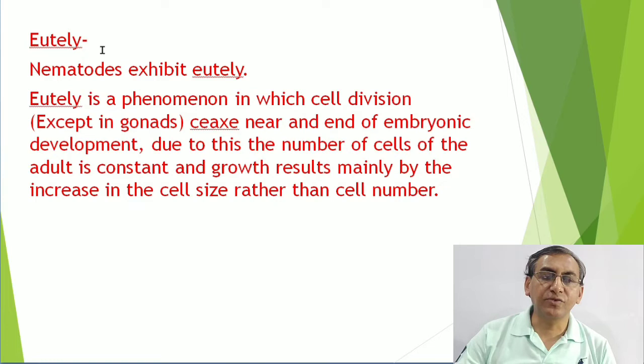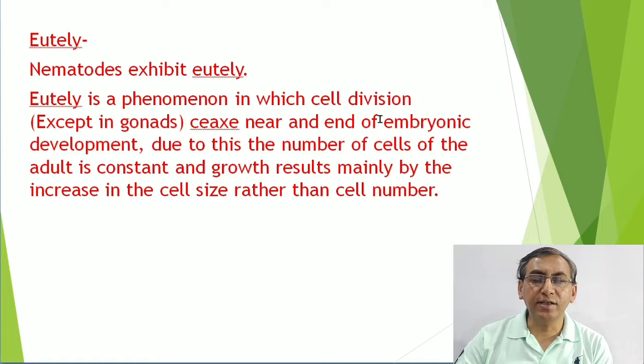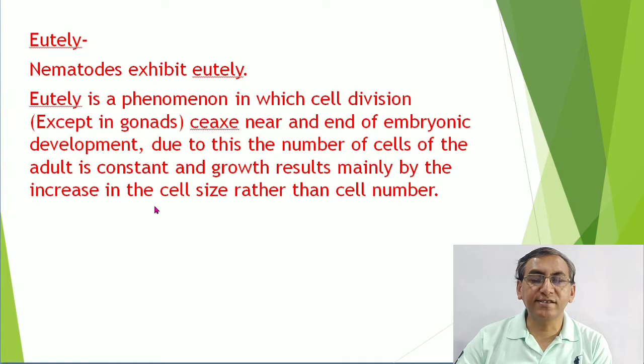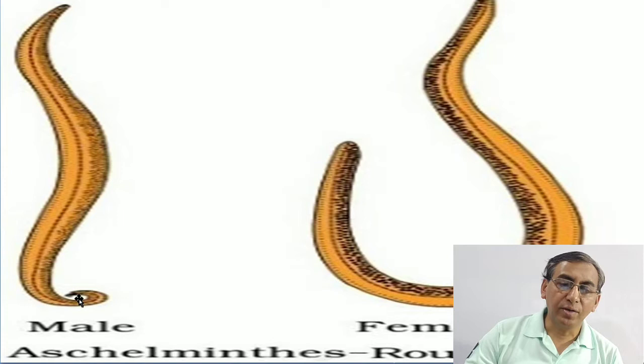Remember that in nematodes a specific feature is eutely. Eutely is a phenomenon where cell division ceases near the end of embryonic development - except in gonads, where cell division continues. Due to this, the number of cells of the adult is constant and growth occurs mainly due to increase in cell size, not cell number.